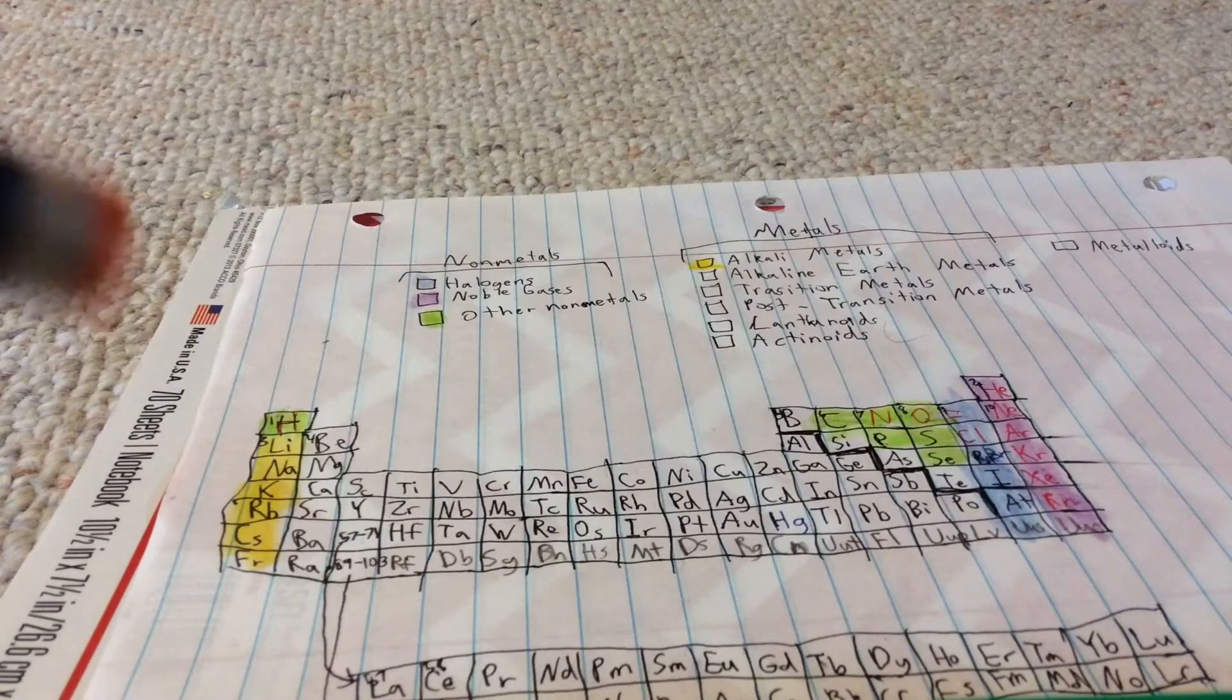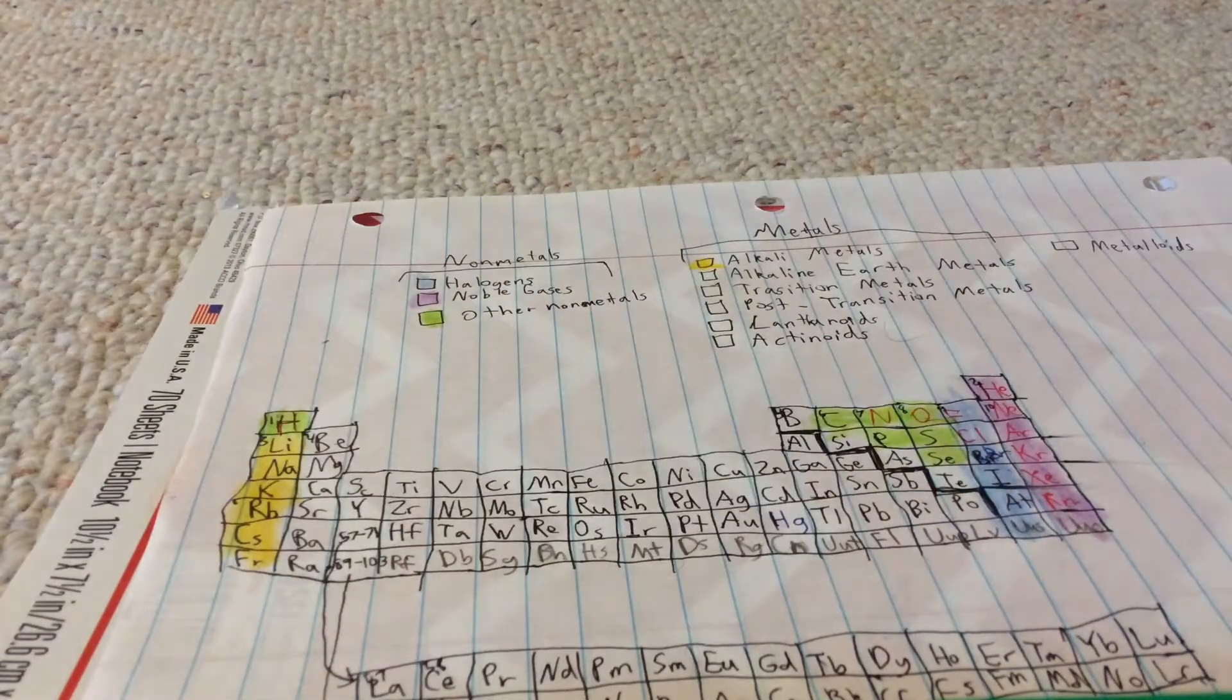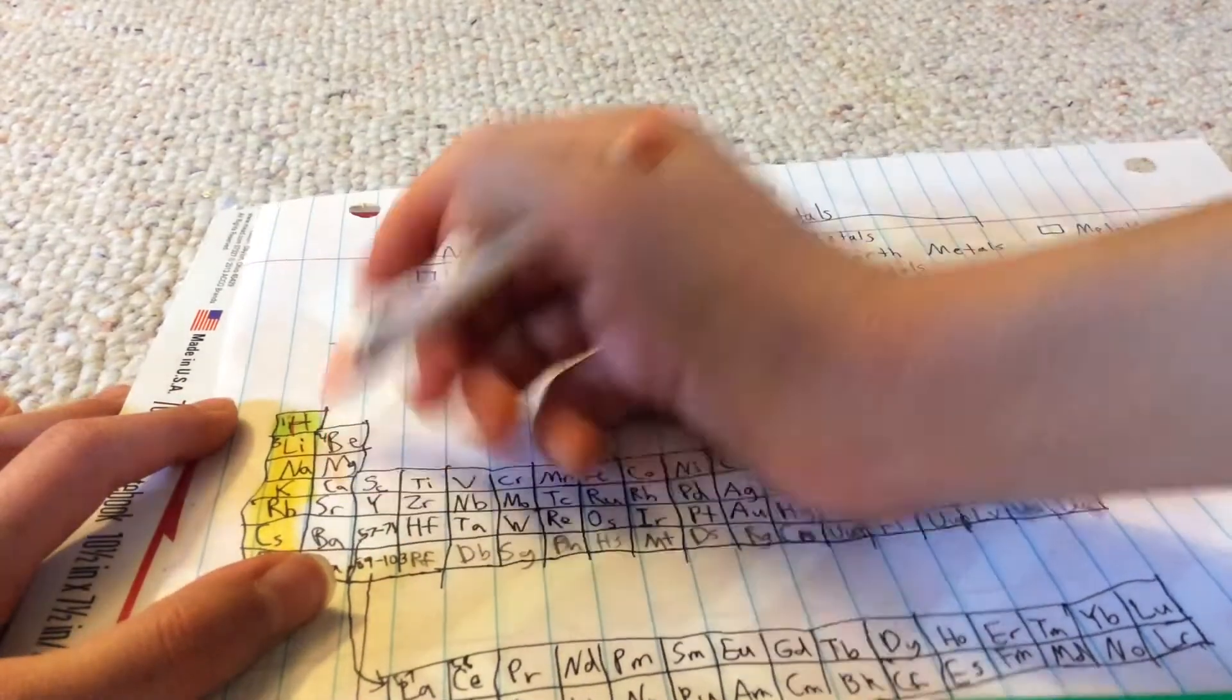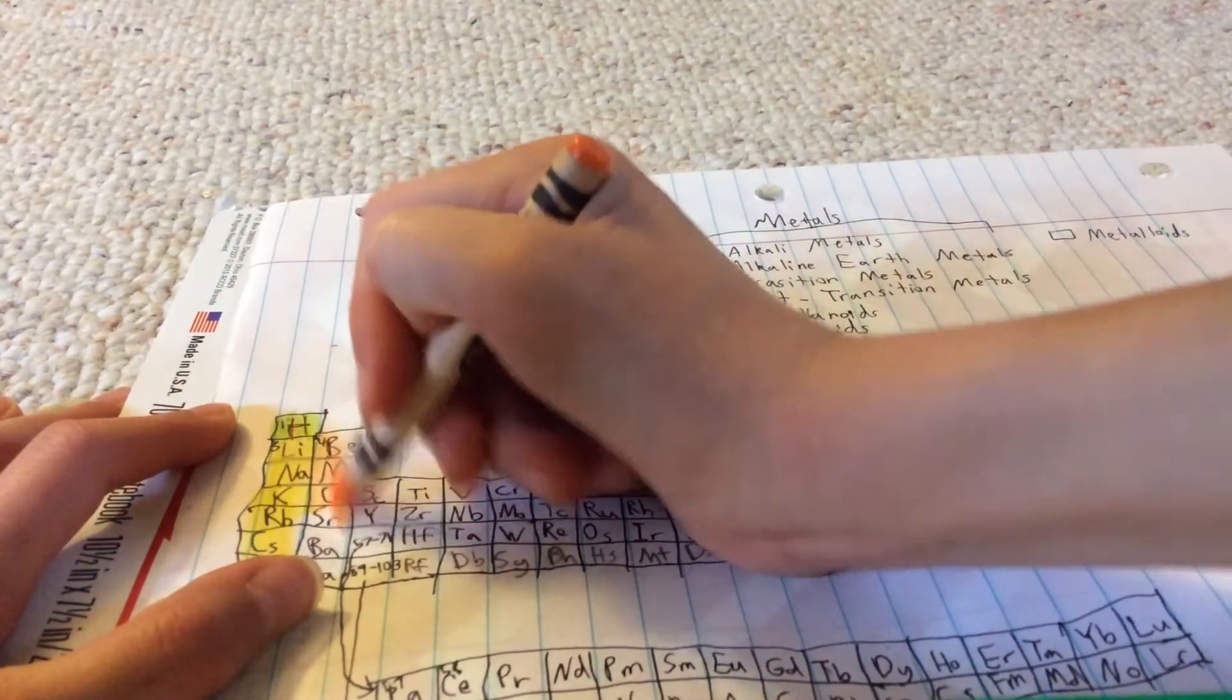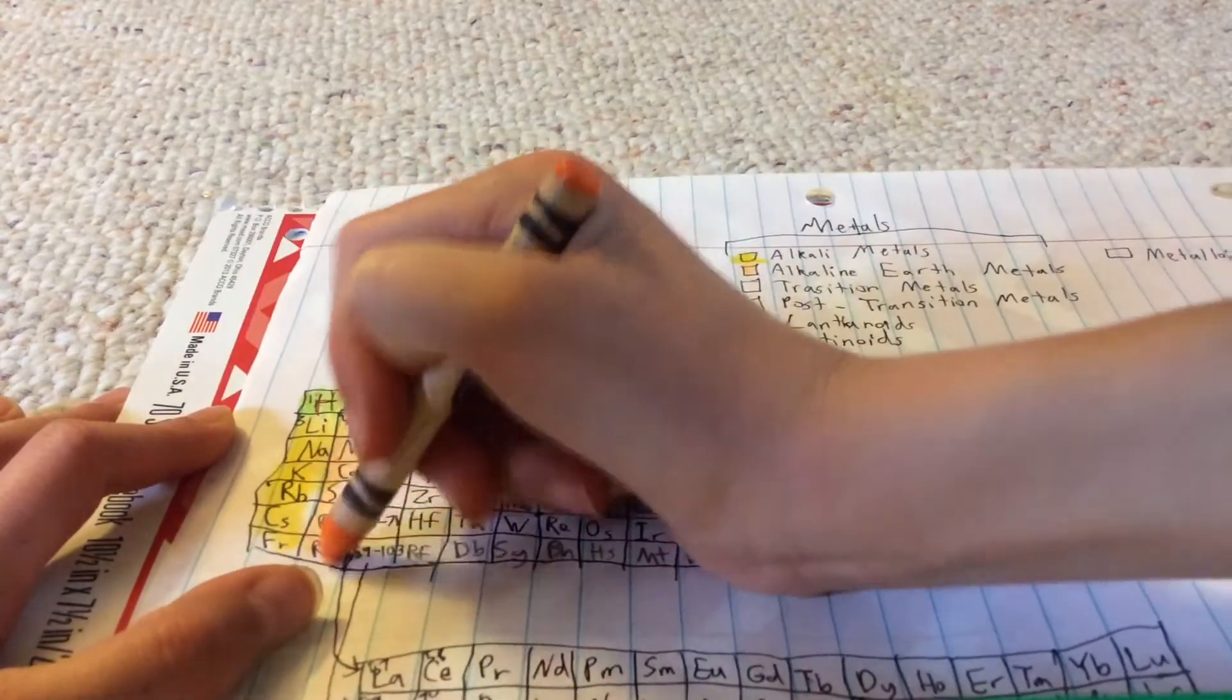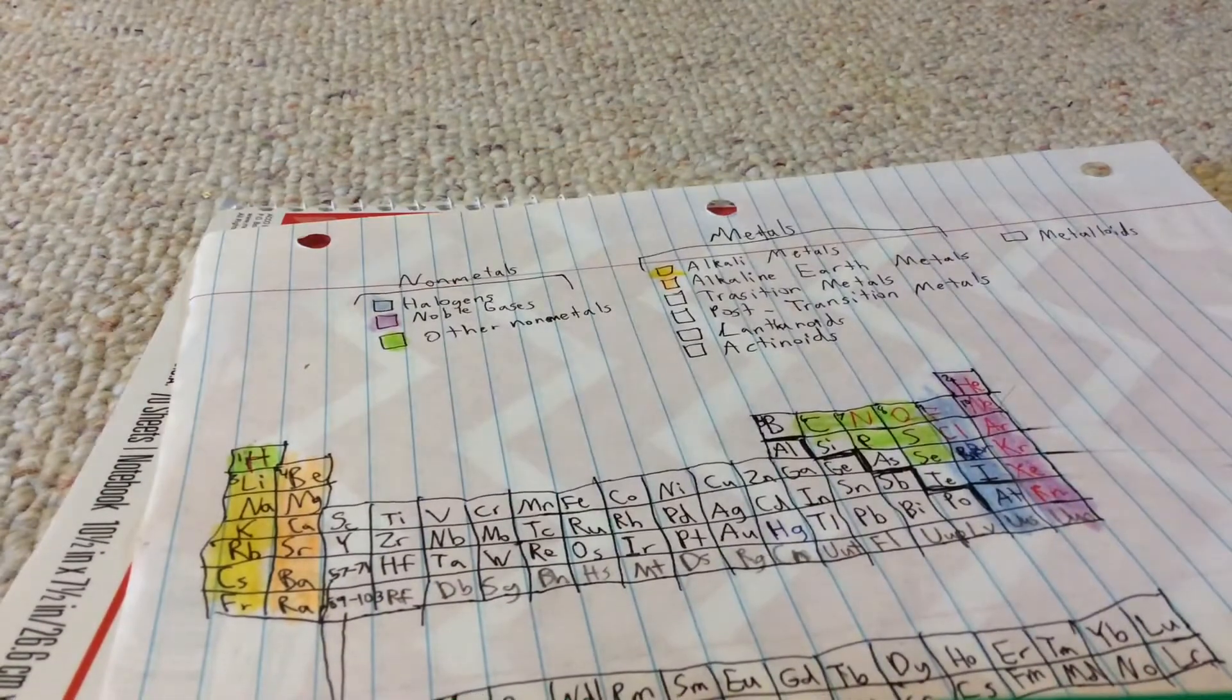Now we're gonna do alkaline earth metals. It's just gonna be this. I want to get atomic tangerine. You can kind of see it but yep.